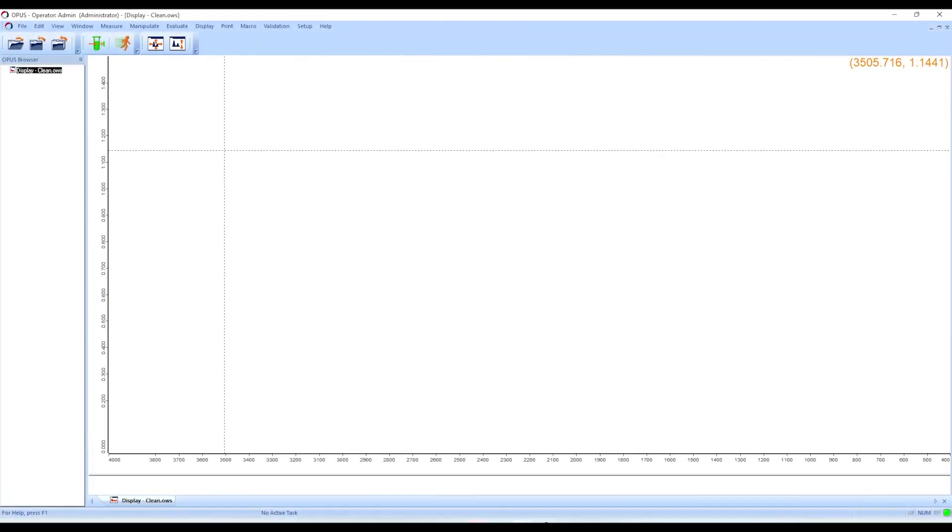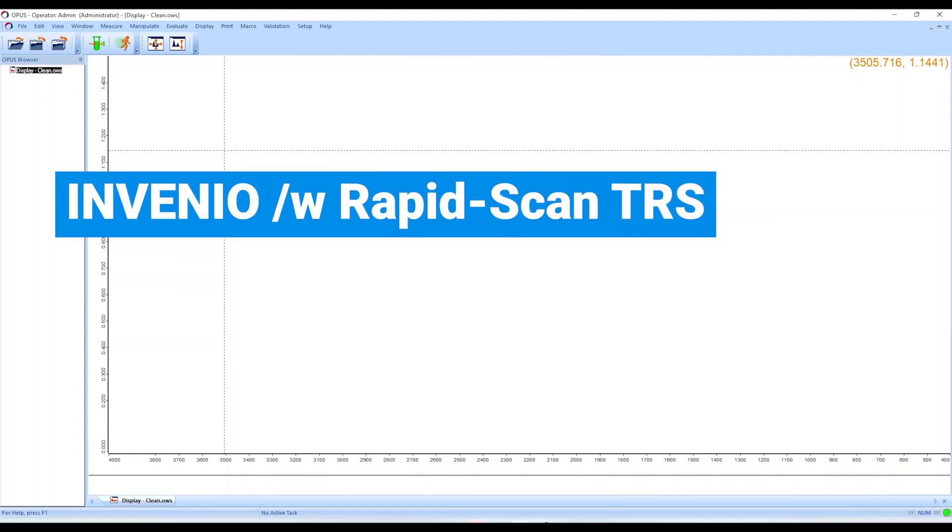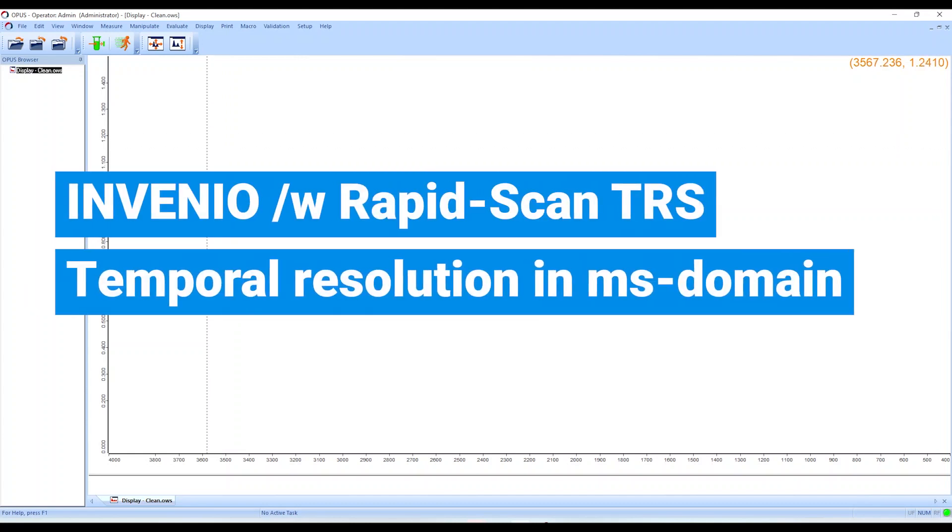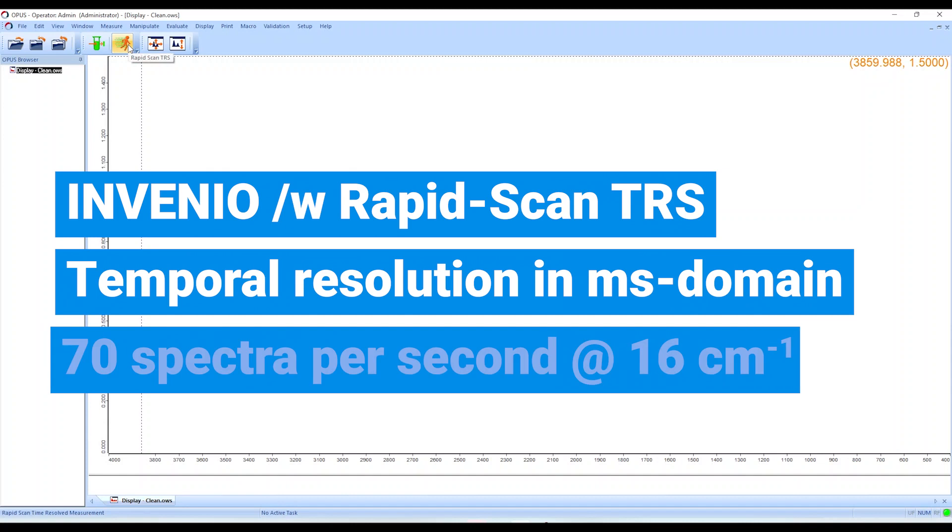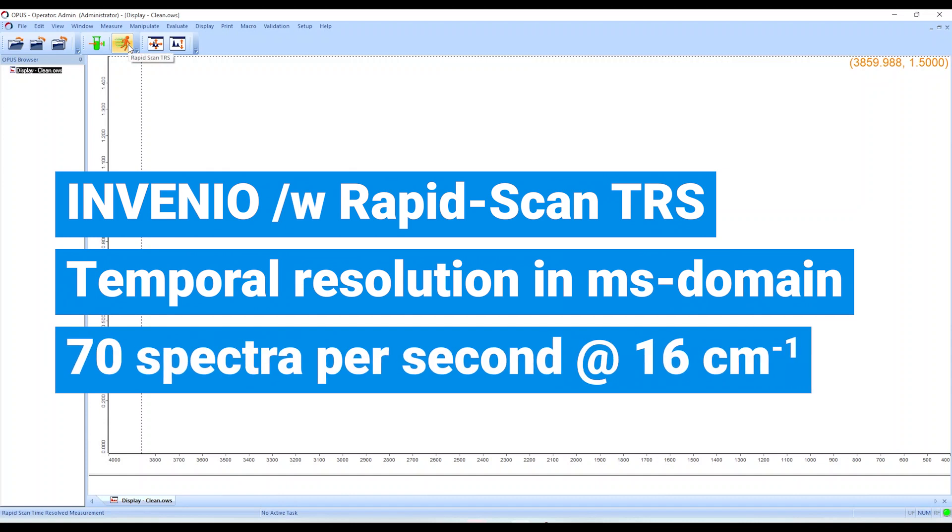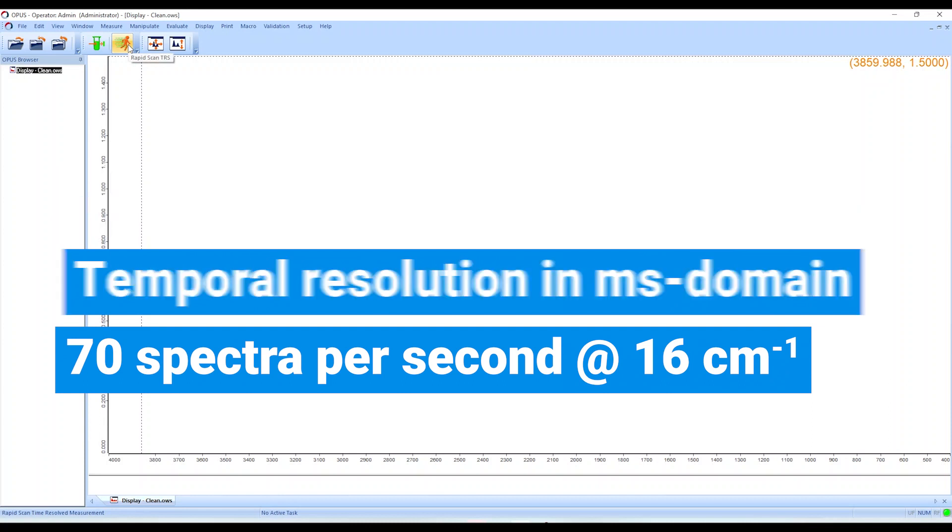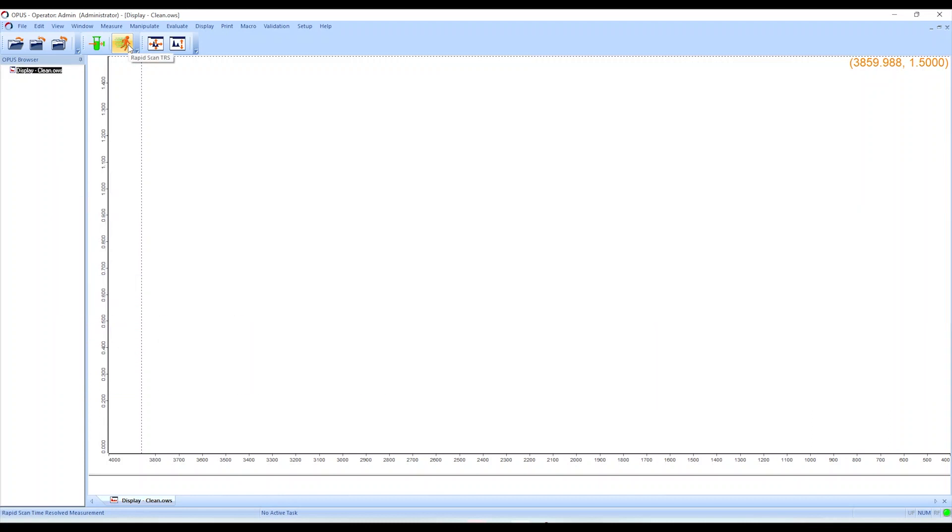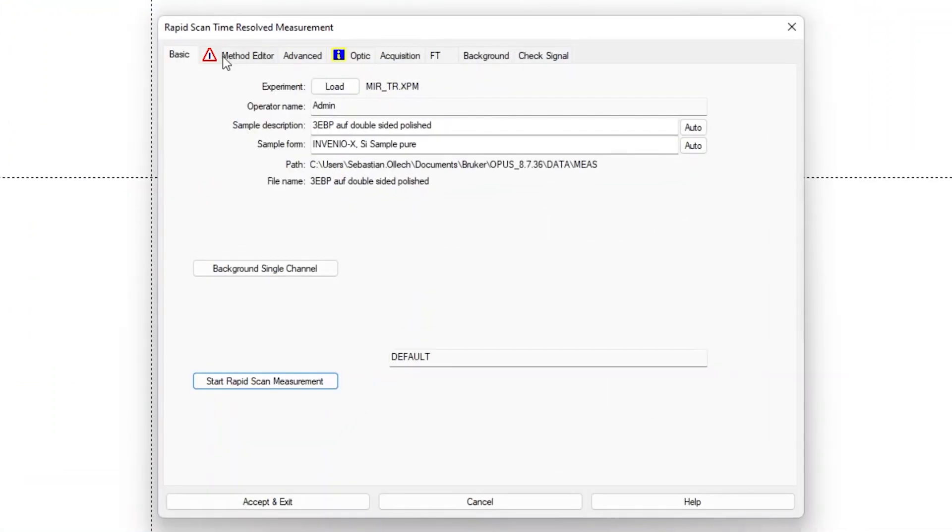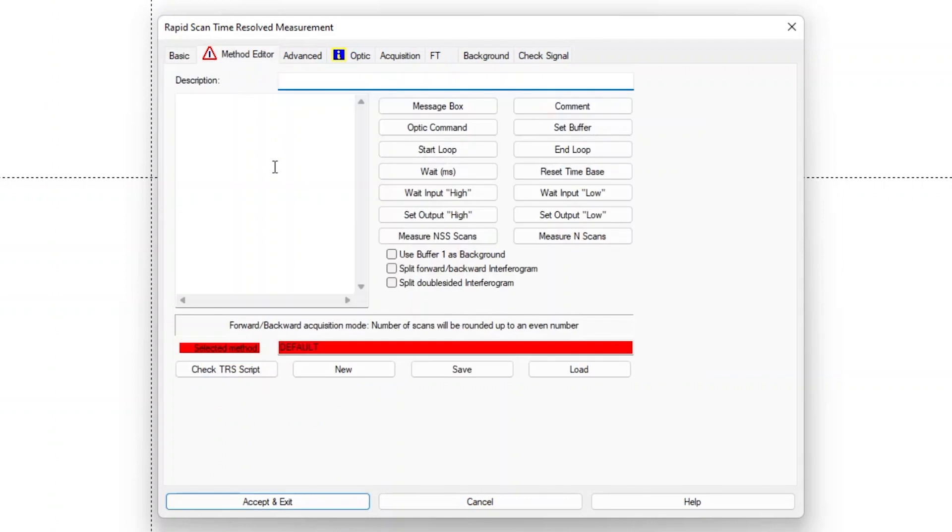An Invenio with RapidScan TRS measurement function can achieve a temporal resolution of up to tens of milliseconds, which enables to measure more than 70 spectra per second using 16 wavenumber spectral resolution.